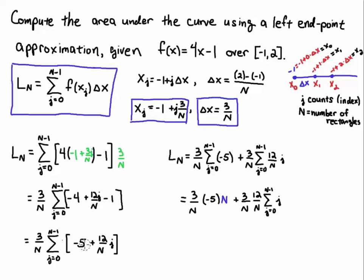Next, I'll take the sum, and I'll use the summation's linearity. That's just a fancy way of saying I can just sum up the minus 5s, and I can just sum up these 12 over nj's. That's all. So I'll just do that. So I'll have 3 over n times, and then I'll take the sum of the minus 5s. That's this term here. And then I'll take 3 over n times the sum of all these terms over here.